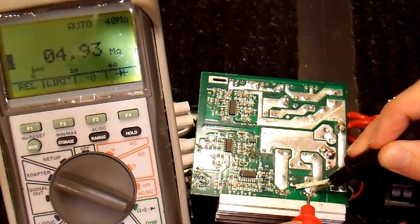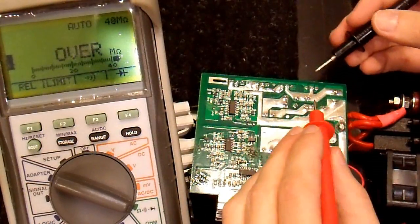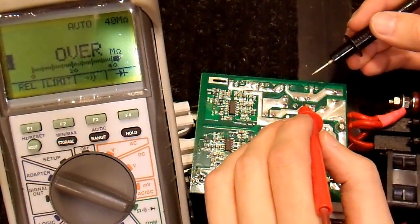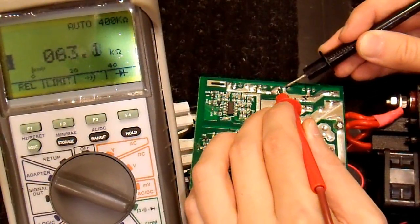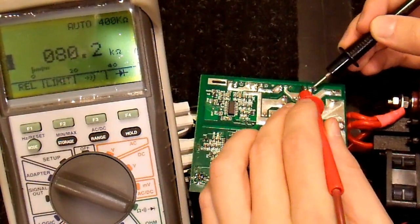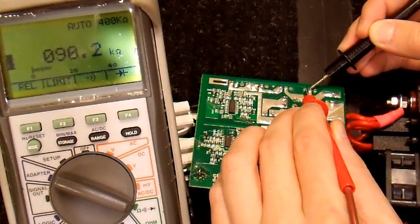5 megaohms, not shorted. It could also be open circuit but that's a lot less likely. I'll do the same to the output stage. Drain and source, not shorted. Drain source, not shorted.